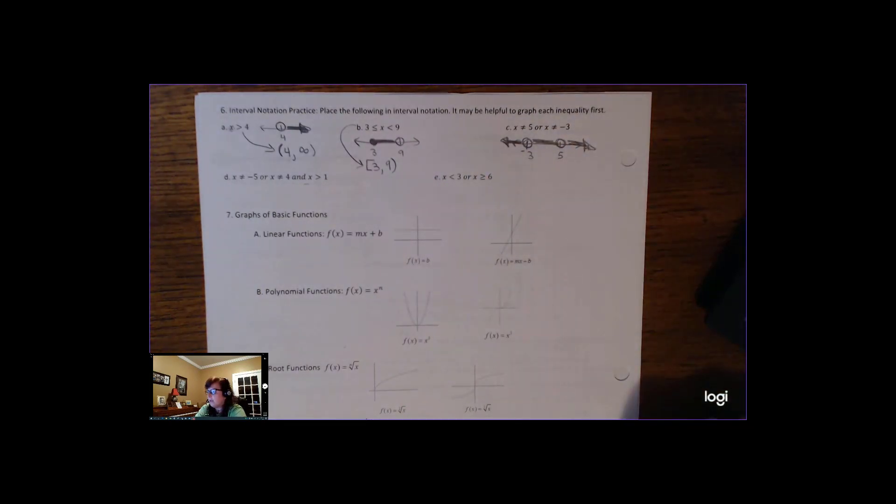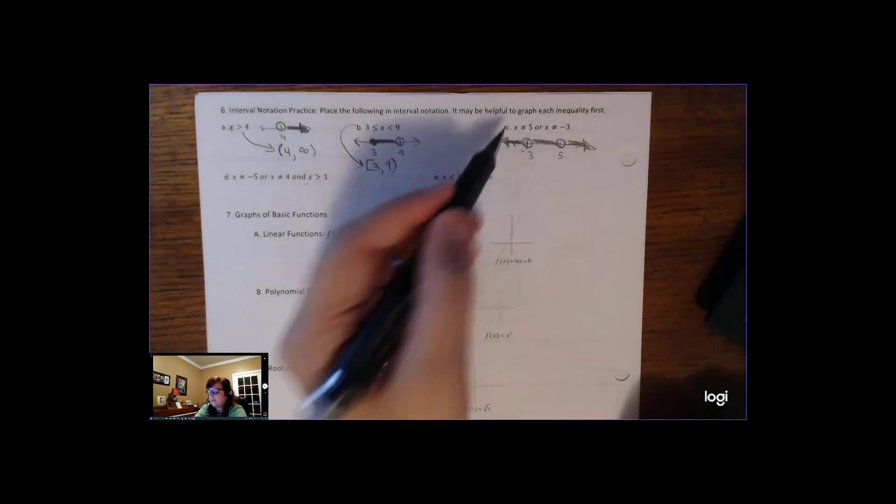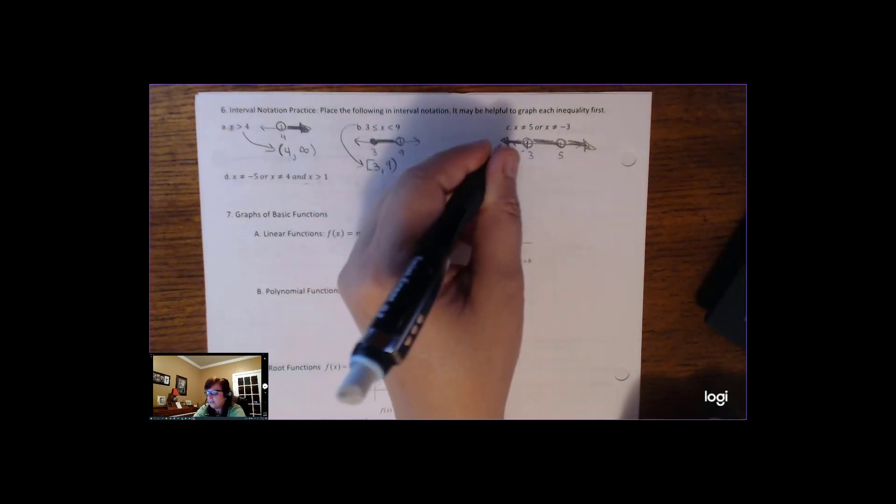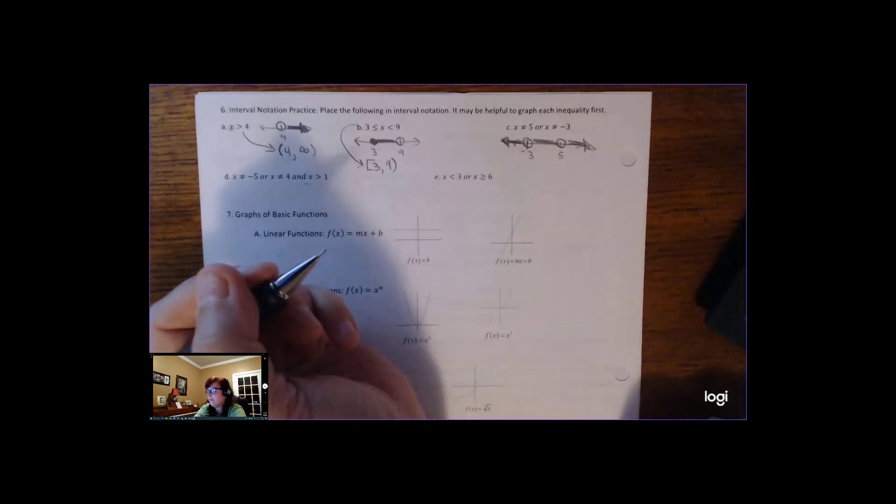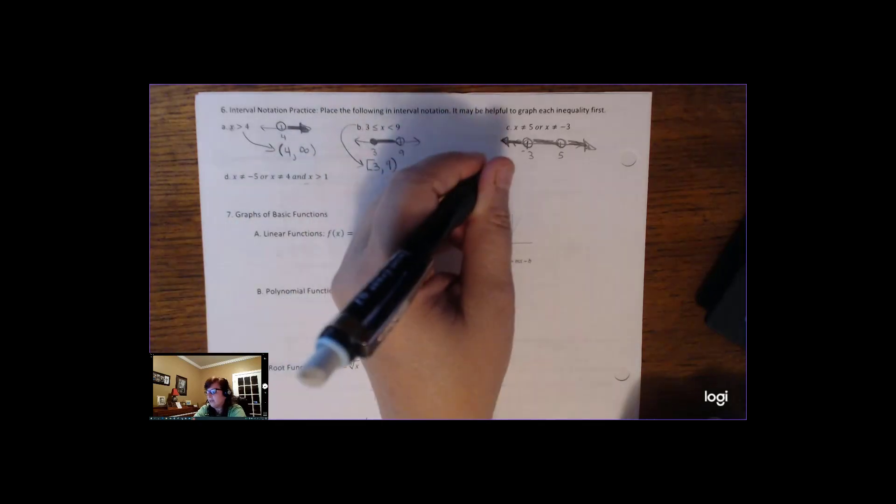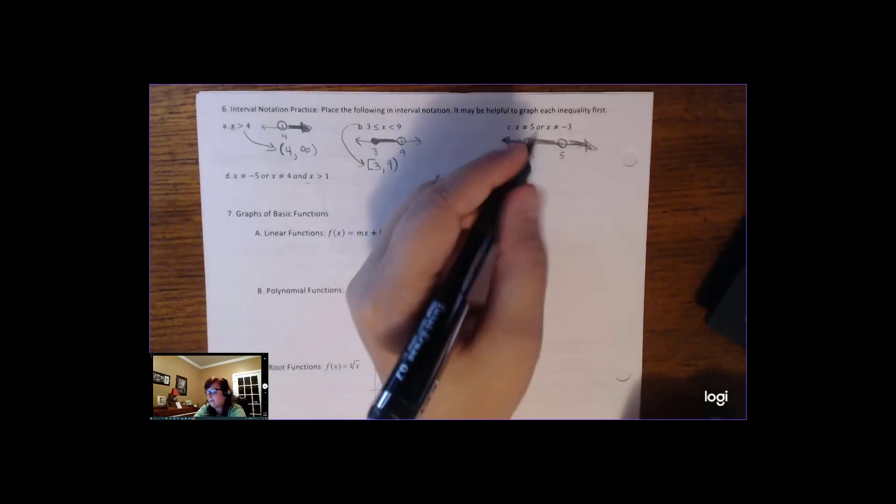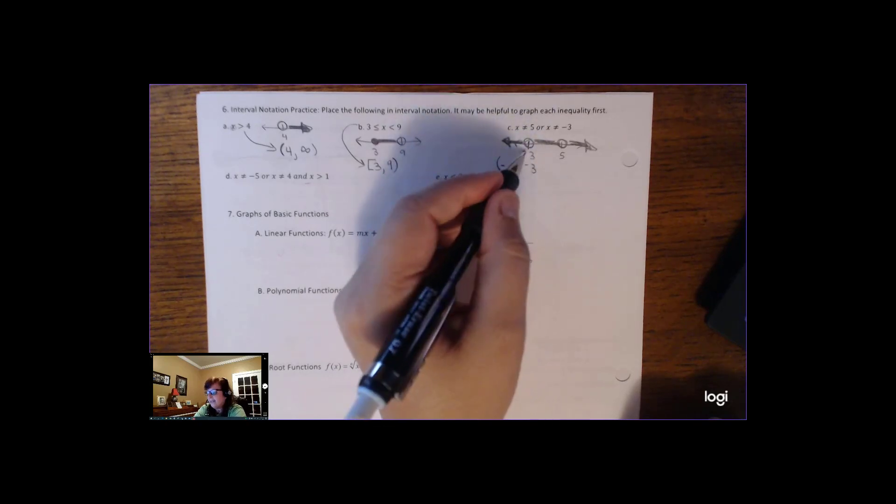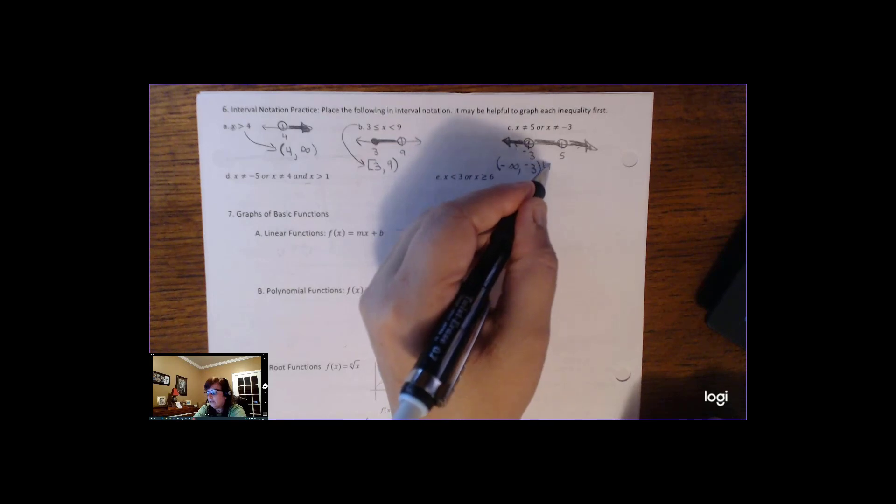And so you get that number line. So what this looks like in interval notation is all the numbers to the left of negative 3 forever and ever and ever. That's the parentheses negative infinity, and then to negative 3, and then we can include negative 3. And then we have this u for union.